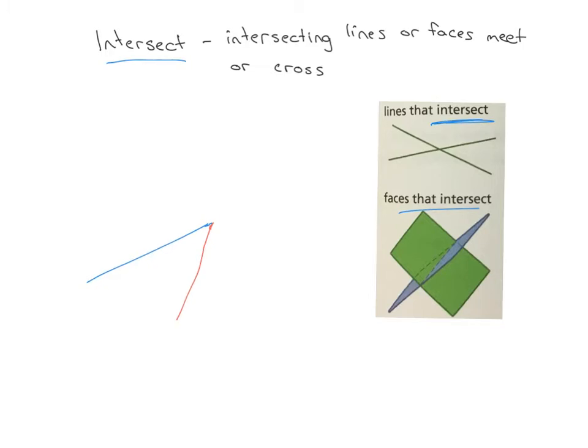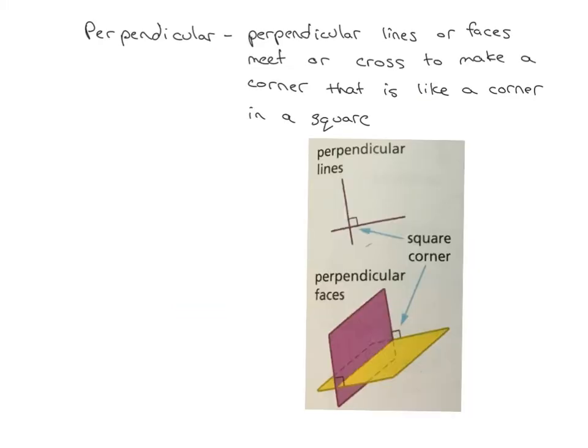Three key ideas here. First one is we've got parallel, two lines or faces that never meet or cross and always stay the same distance apart. Second key idea. Let's look at our last word here. Last word is perpendicular.